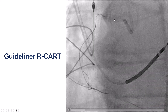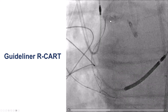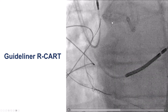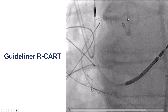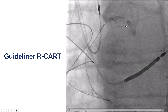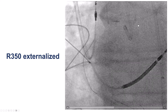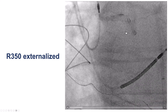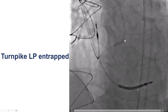We advanced an antegrade guide extension and performed a guide extension reverse CART, successfully advancing the retrograde guide wire into the antegrade guide catheter. We placed an R350 guide wire and externalized it, but then we could not get a Turnpike LP to go back. This was paradoxical because we had an externalized wire with great support, but it would not move back.